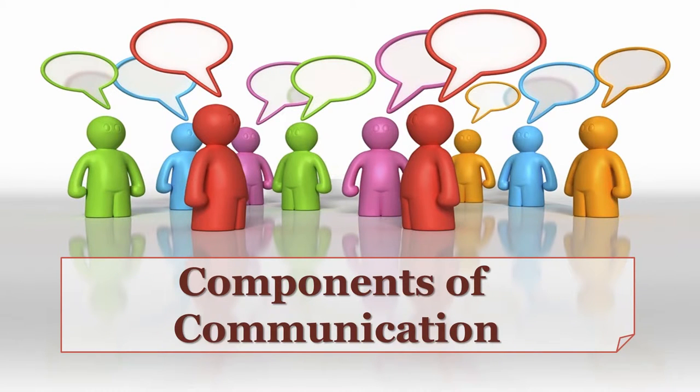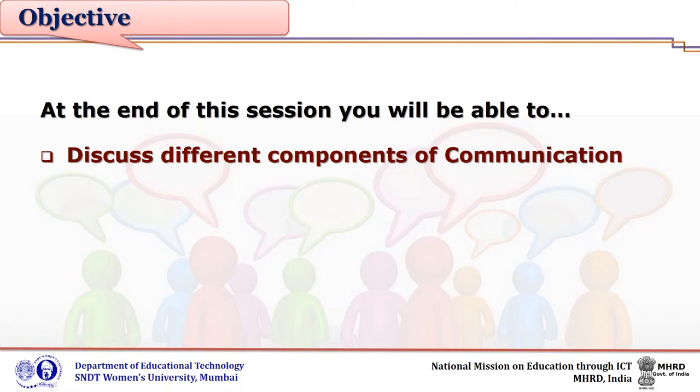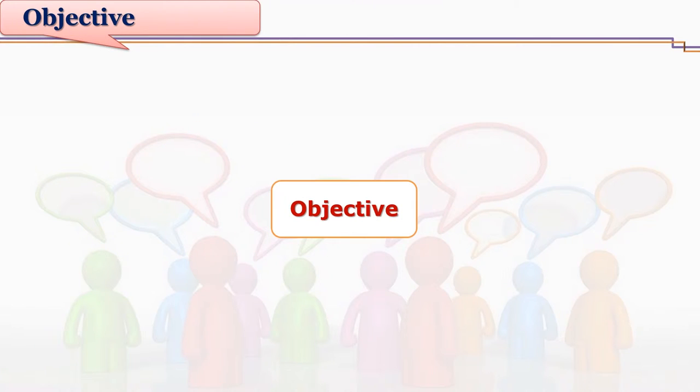Communication involves various components in the process, and we need to see the role of every component so as to make our communication effective. At the end of this session you will be able to discuss different components of communication. Let us see the component of objective. We can also refer to this as the aim of communication.